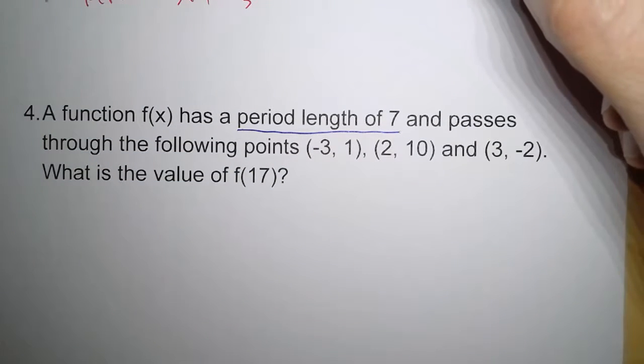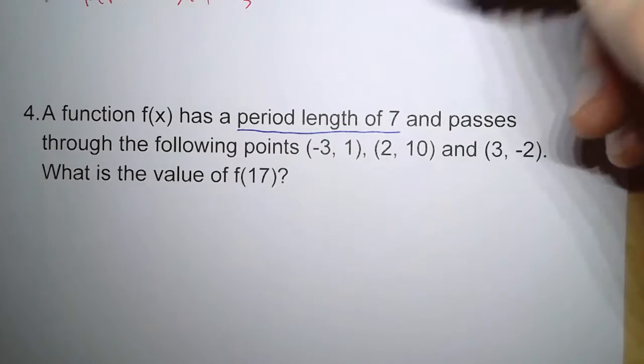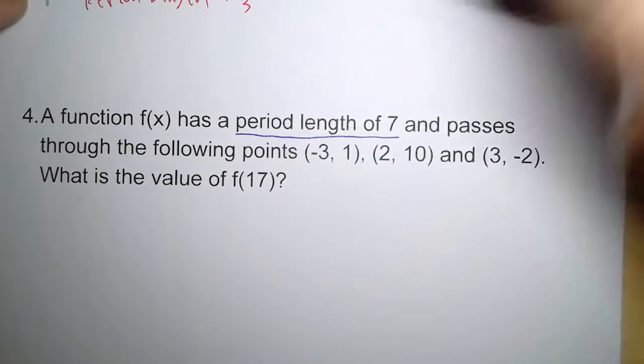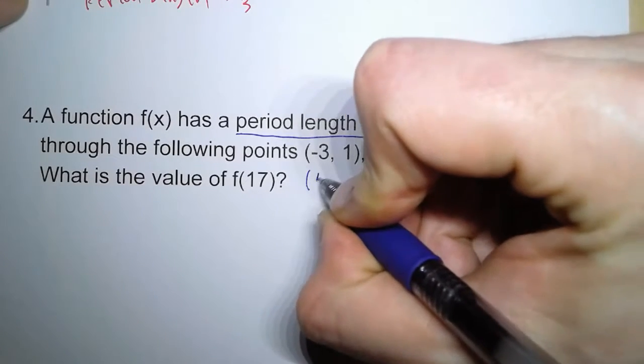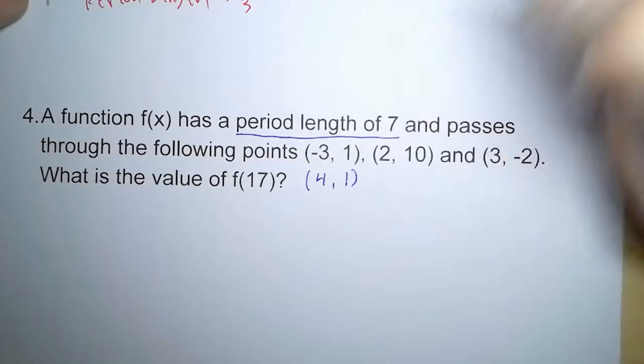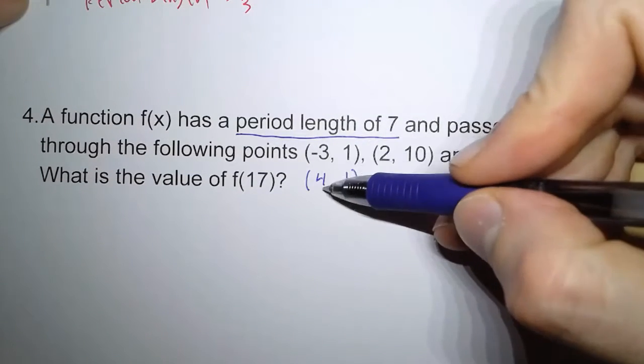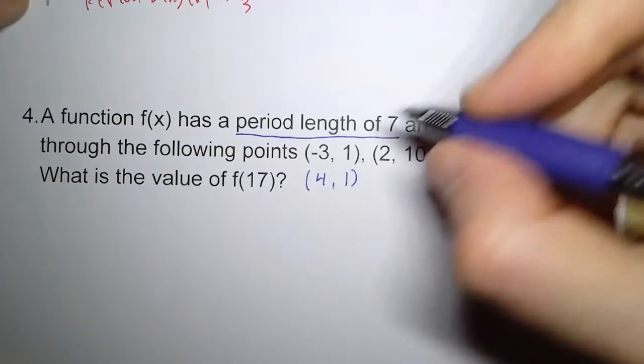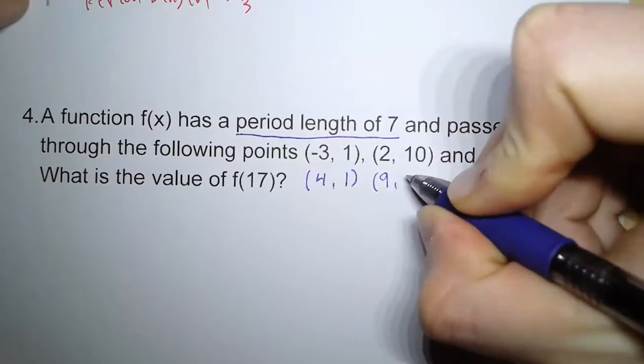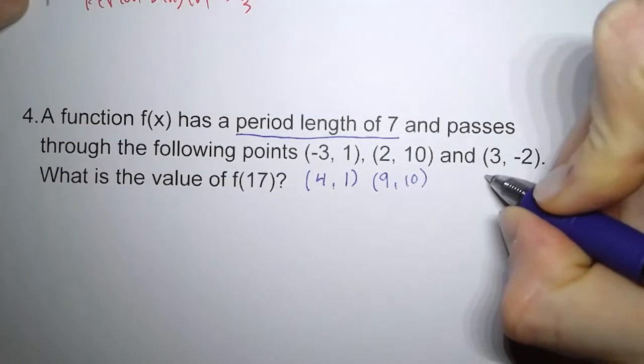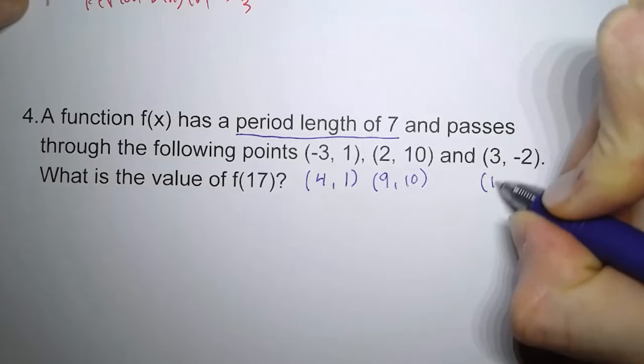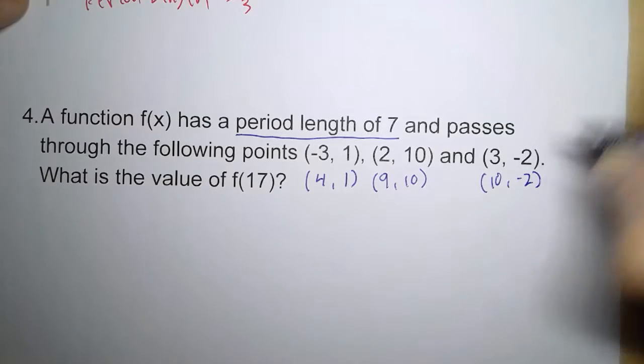And so if it has a period length of seven, what that means is, if you take each x value and add seven, the y value is going to repeat. So that means we add seven to this, we're going to get a y value of one again. We add seven to this, we're going to get a value of 10 again. If we add a value of seven to this, we get negative two again.